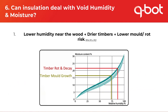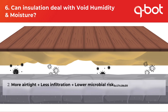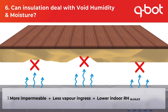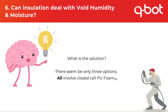The less humidity the timber is exposed to, the drier it stays, and thus the lower the risk of damp, mould and rot. The more airtight the insulation, the less air infiltration gets into the house with associated microbes and bacteria. The more vapour impermeable the insulation layer, the less water vapour ingress from the void and the lower the relative humidity indoors. There are only three options — all of them involve closed cell polyurethane foam.